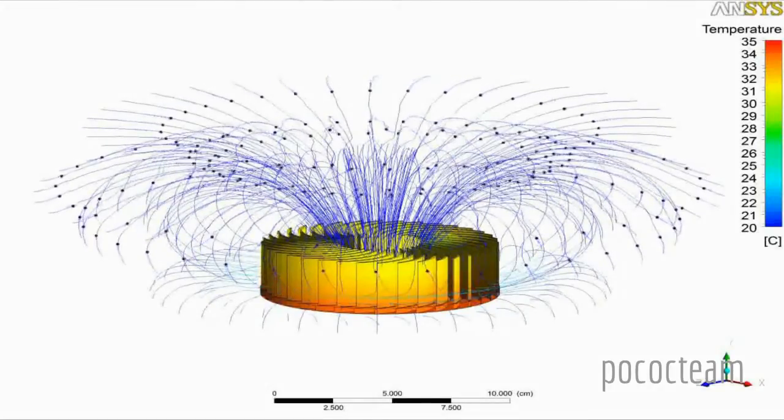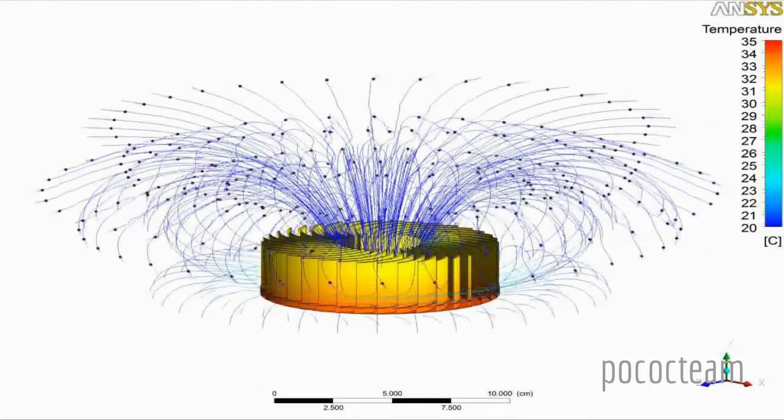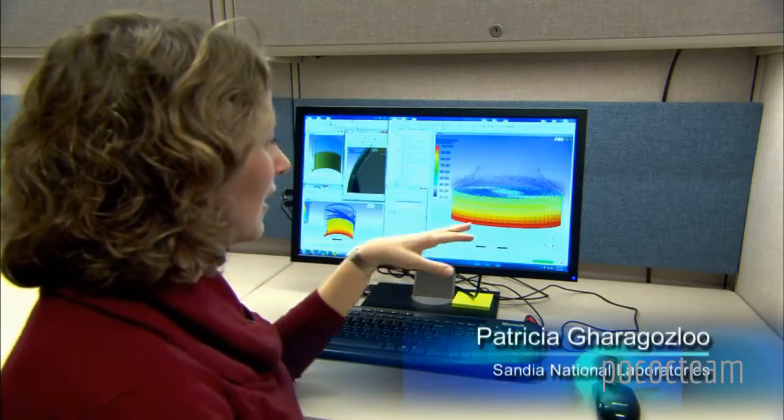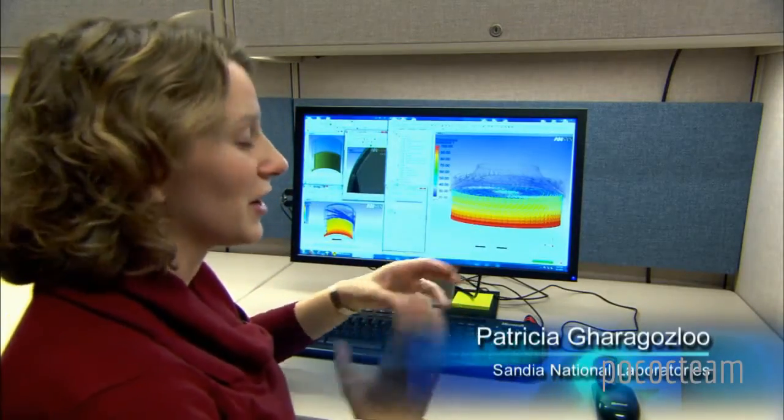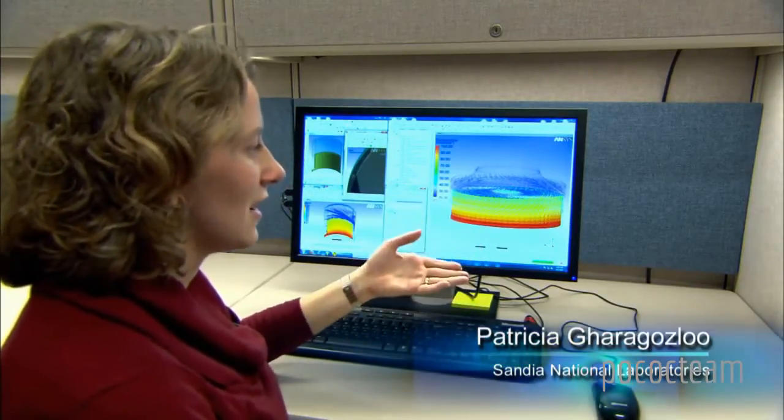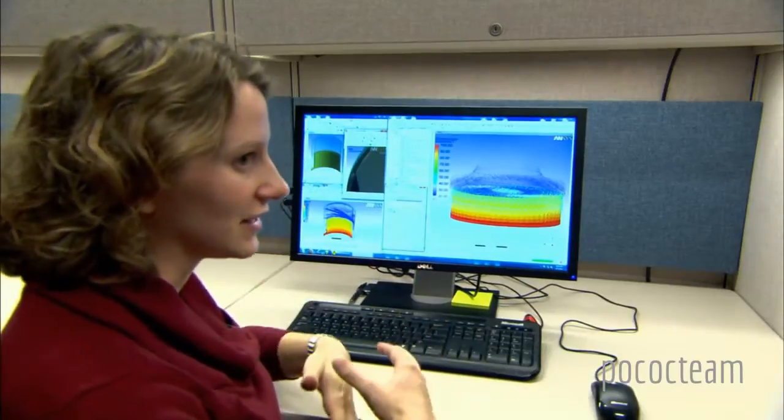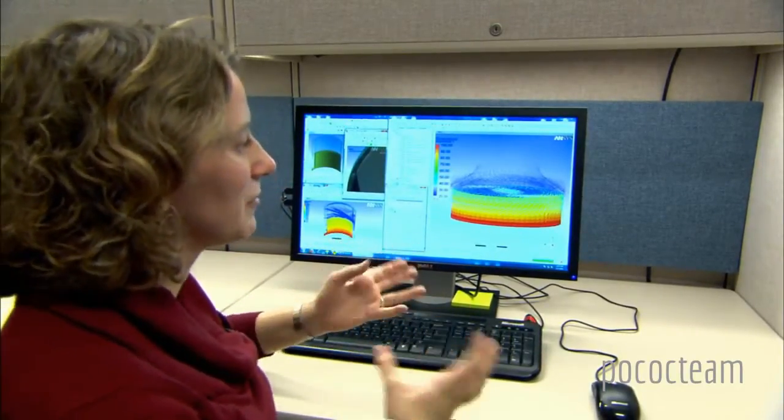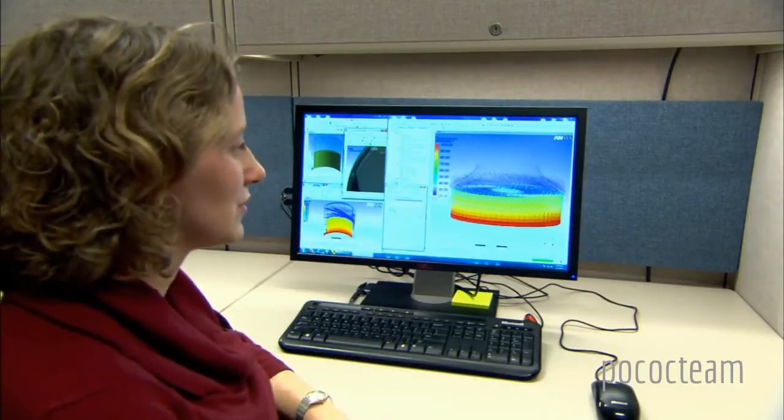So this is an initial step in the modeling phase. We're going to validate it against experimental data. In the end, our model will become a parametric study of optimization so that we can change the fin design, the fin length, the number of fins, so that we can optimize the impeller device to remove the most heat.